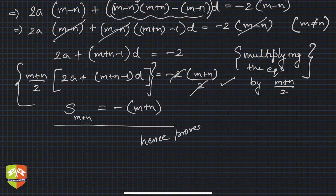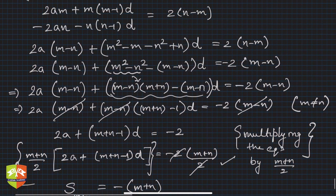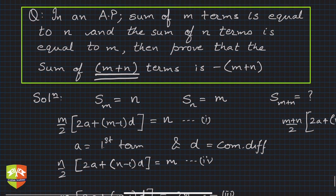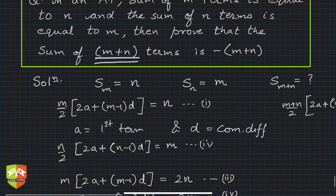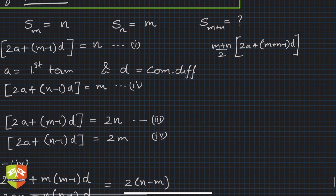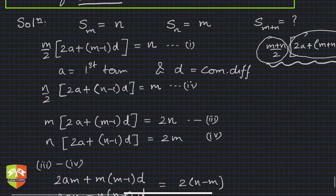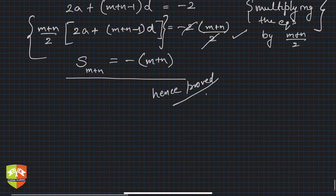What is the learning? So write the given formula, use the formula of sum of n terms of an AP, and then we wrote two equations, manipulated, subtracted, and got the desired result. So keep track of what exactly you have to find out. While we had this thing in our mind, we got this expression while doing the manipulations, and then we multiplied simply by m plus n by 2 to get the desired result. Hence this problem was solved.